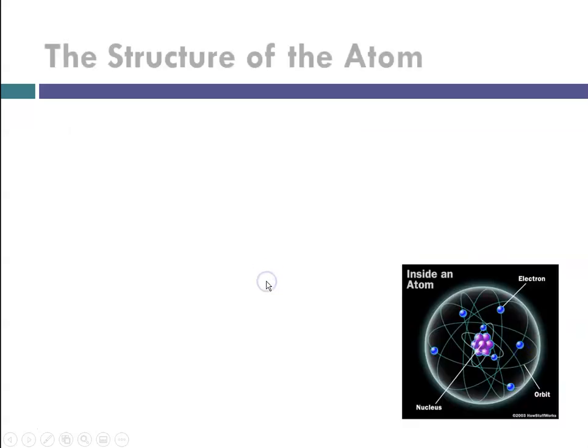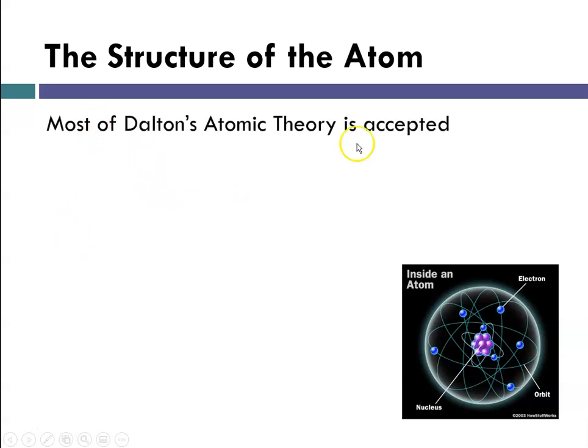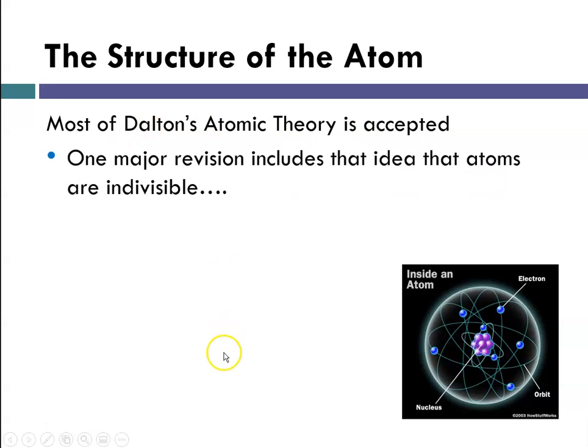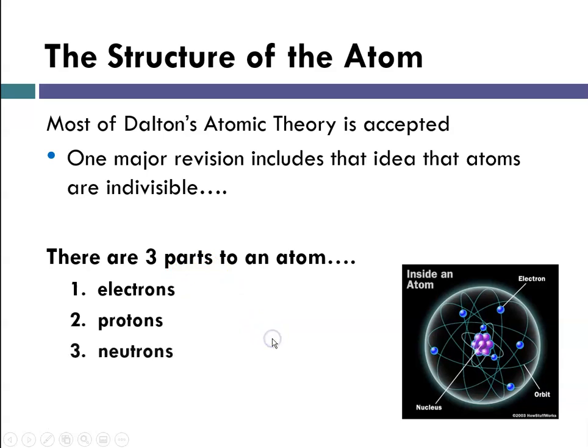The structure of the atom today is still similar to what Dalton suggested. Most of his theory is still accepted today with a couple of major revisions. The most important thing he got wrong was that atoms are indivisible. We know now that atoms consist of three major parts. There are even smaller particles, but the three major parts are electrons, protons, and neutrons.